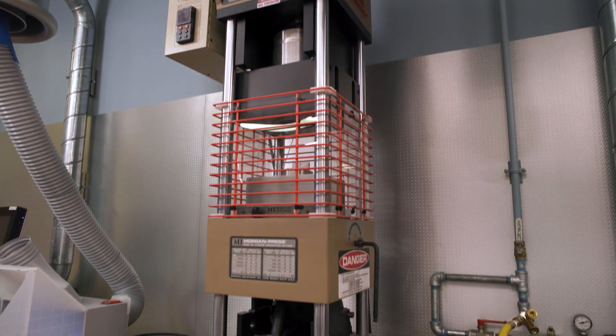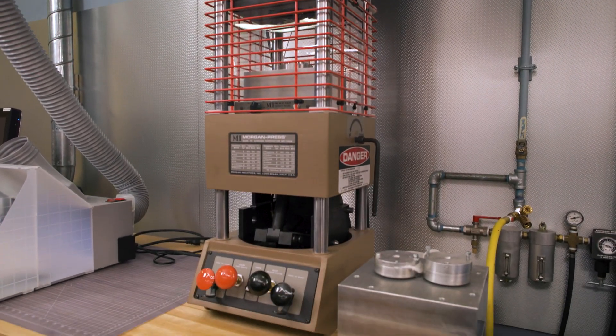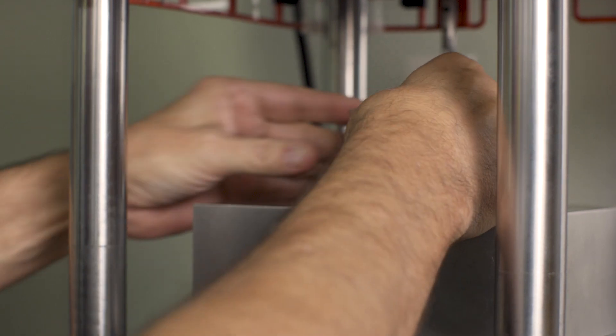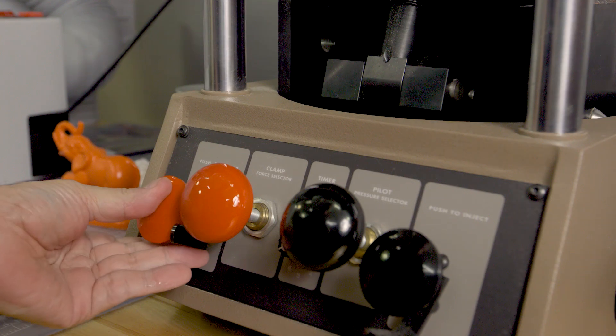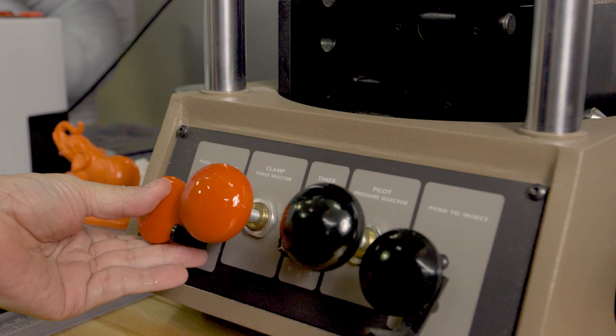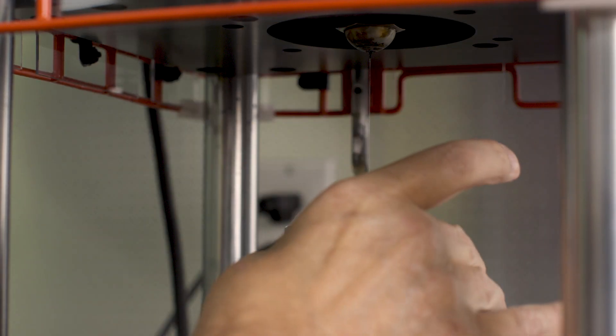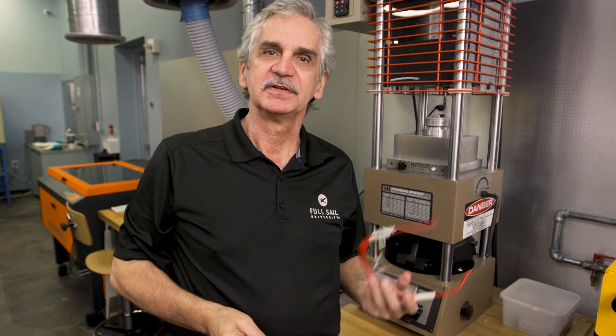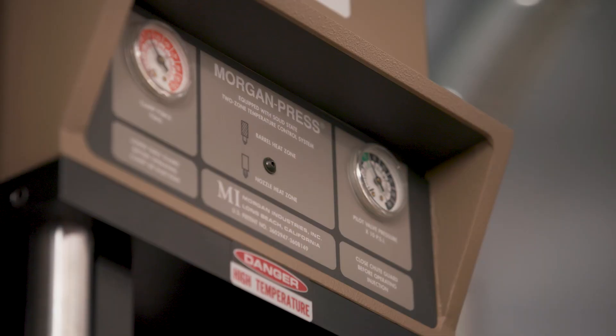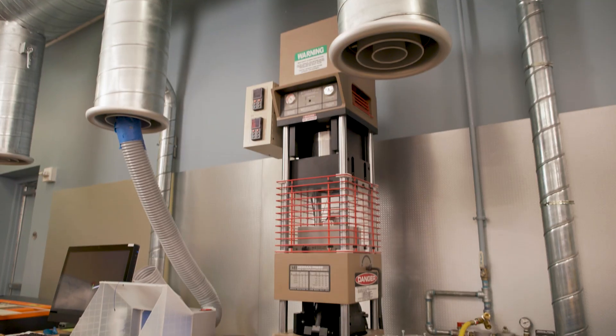Another important piece of equipment in the fab lab, the Morgan injection molding machine heats up plastic pellets under pressure and injects the molten plastic into a mold. Unlike 3D printing, these parts are much stronger because they're made of 100 percent density plastic.